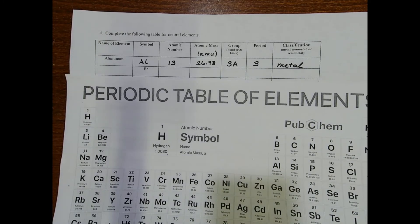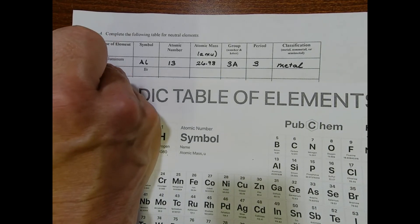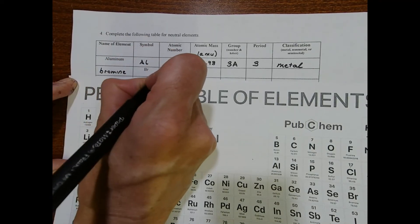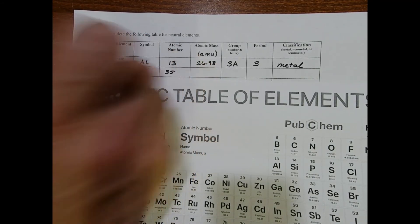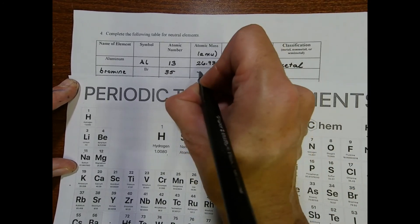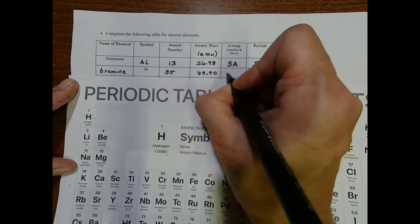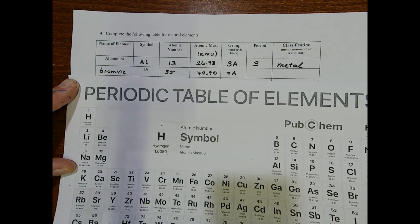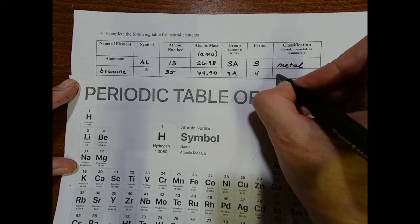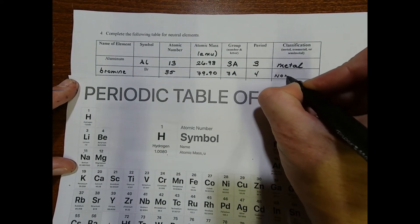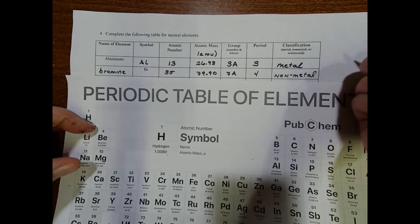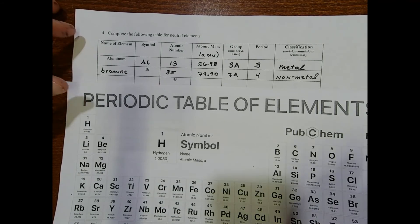The next row here, we have Br, which stands for bromine. It has an atomic number of 35, its mass is 79.90 amu, it's in group 7A of the periodic table, and it's in the fourth row, so we'll say it's in the fourth period. Bromine is definitely a non-metal—it is a diatomic non-metal.